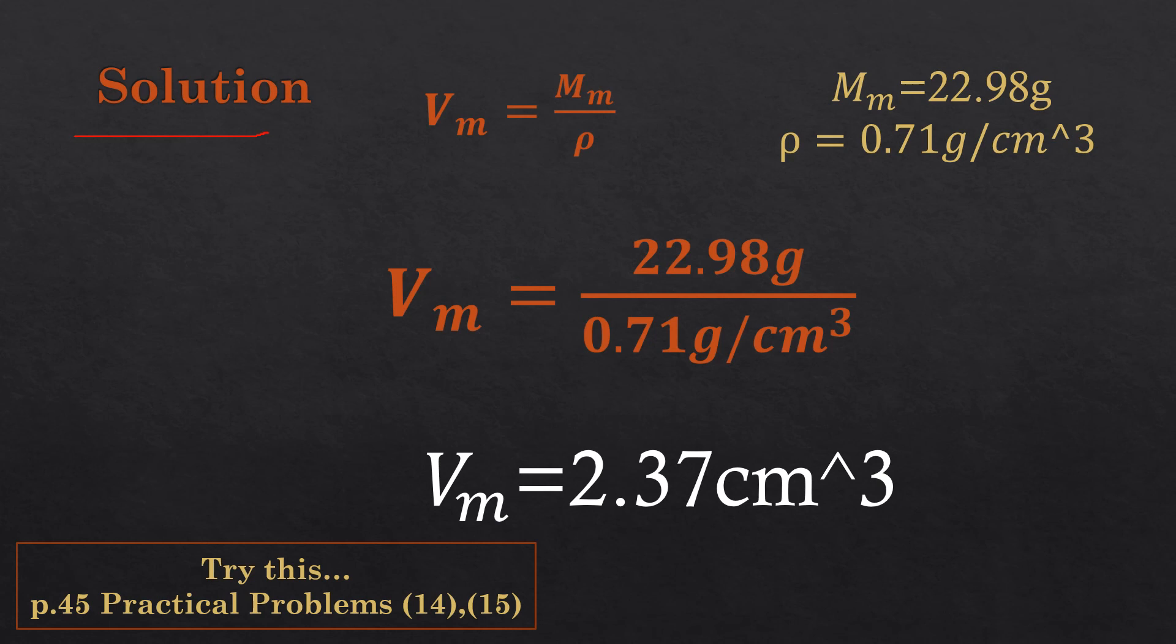Vm equals Mm over ρ, where ρ is density and Mm is molar mass. We have to find molar volume—just divide molar mass by density. When we divide it, grams cancel out, leaving cm³. You will use your calculator: 22.98 divided by 0.71.